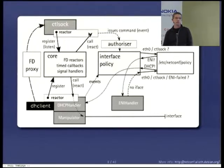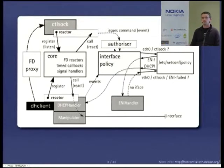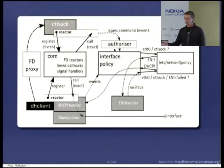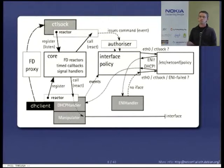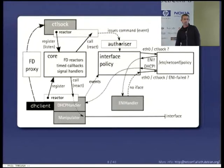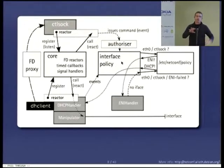The control socket is destined to be the main interface for any form of communication with NetConf. This is also where I hope to later add D-Bus adapters so that more advanced tools can interface with this core. When we get an ifup eth0 command, we pass it through an authorizer. The authorizer determines whether the user who connected to the control socket is authorized to issue this command for this interface. If no, bugger off. If yes, it passes it on to the interface policy.